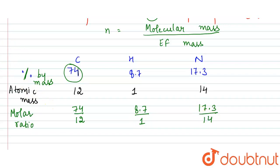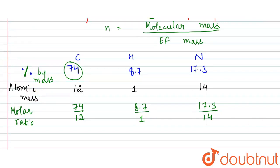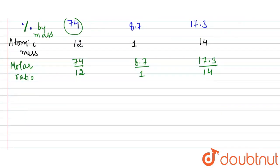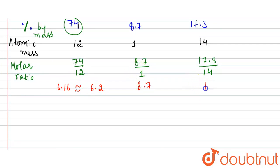Calculating these values: 74/12 gives approximately 6.2, 8.7/1 gives 8.7, and 17.3/14 gives approximately 1.2. We take values up to one decimal place.